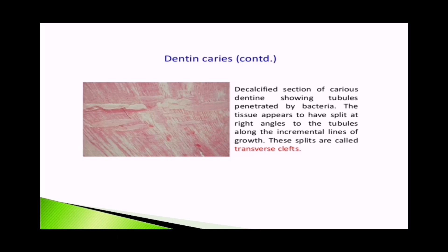A histological picture of a decalcified section of carious dentine shows tubules penetrated by bacteria. The tissue appears to split at right angles to the dentinal tubule, and an incremental line of growth is visible. This is the transverse cleft.